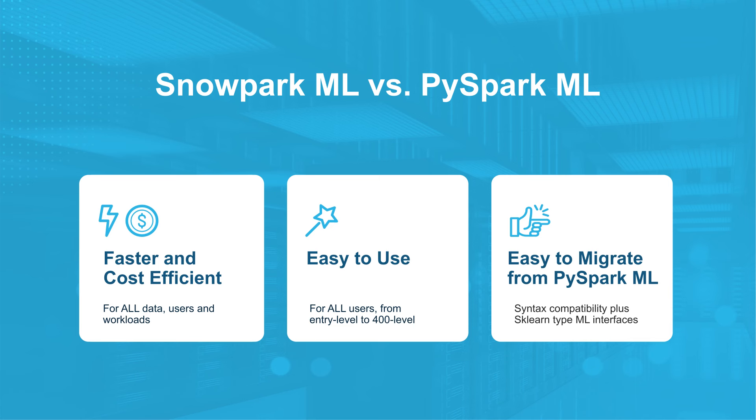PySpark is an open source framework for distributed and scalable data processing on large data sets. PySparkML is the same — a distributed and scalable framework for doing machine learning workloads on medium to large data sets. The PySparkML equivalent in Snowflake is SnowparkML. The three key takeaways I want you to walk away with are: SnowparkML is not just faster and more cost-efficient than PySparkML — it's a lot more easy to use for all your workloads, level 100 to level 400, and it's very easy to migrate from PySparkML to SnowparkML.